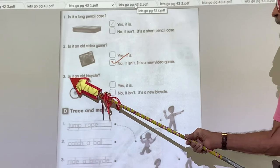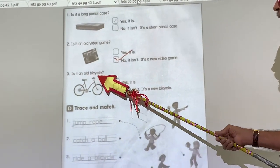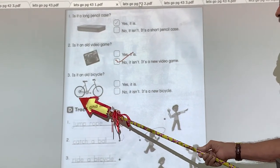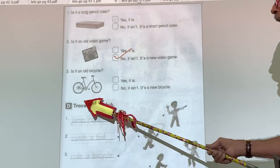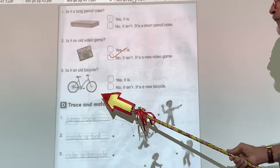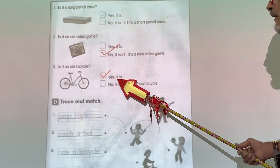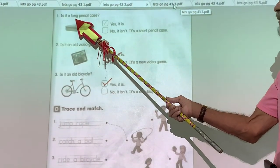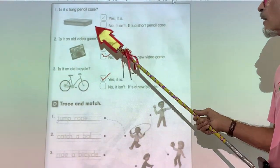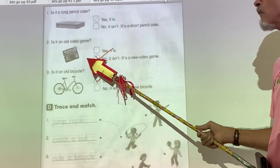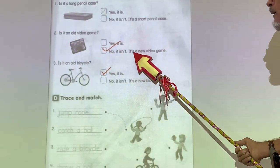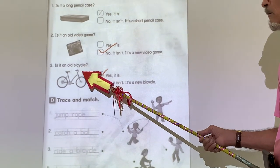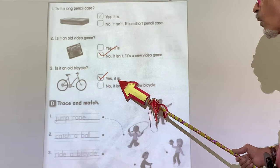Look at number three. Is it an old bicycle? Look at the tire. It looks kind of flat to me. Is it old or new? It's an old bicycle. Yes, it is old. A long pencil case, yes, it is. An old video game, no, it isn't. It's a new video game. An old bicycle, yes, it is old.